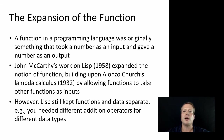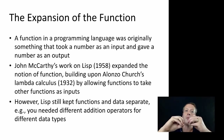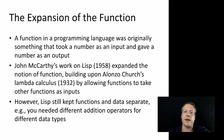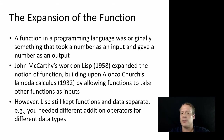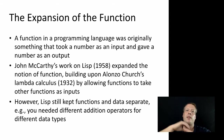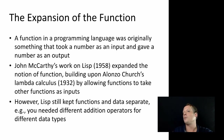Originally, in some of the very early notions of computer programming, a function was simply something that took a number, did something with it, and then created another number as an output. We still think of functions in that way today at a rudimentary level, and it's what we're often taught in introductory math classes. But in reality, a function is something that takes just about anything — any kind of object — transforms it, and then spits out another object on the other side.